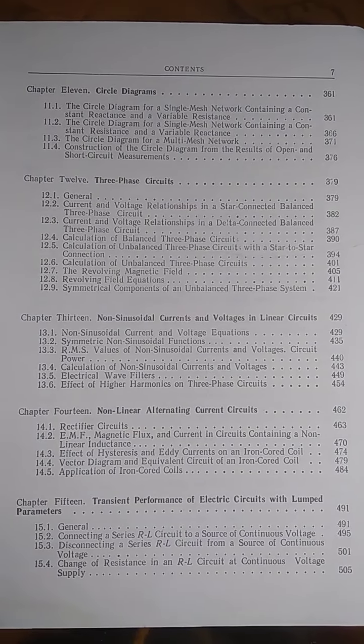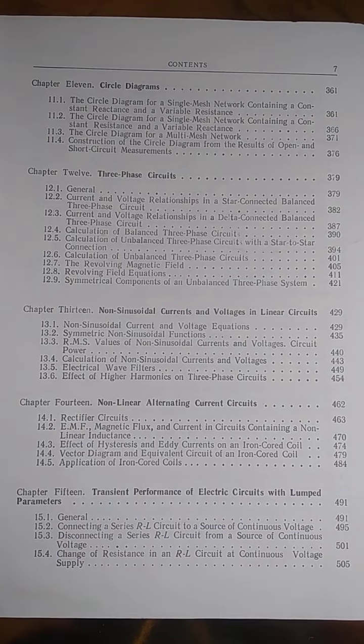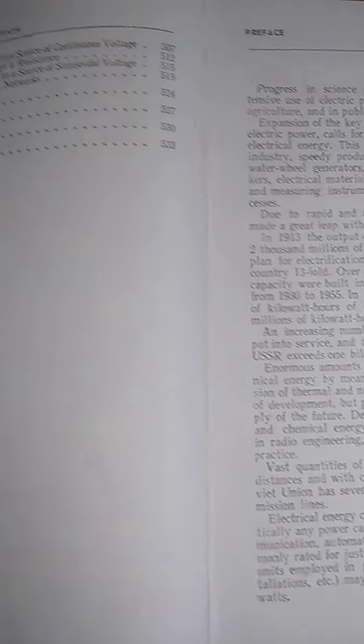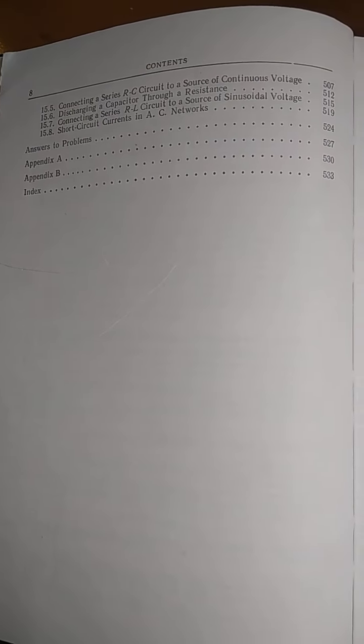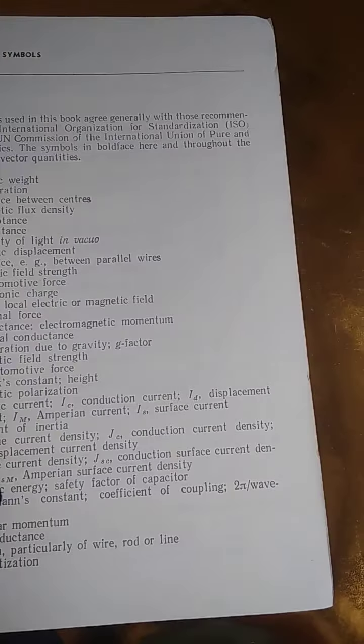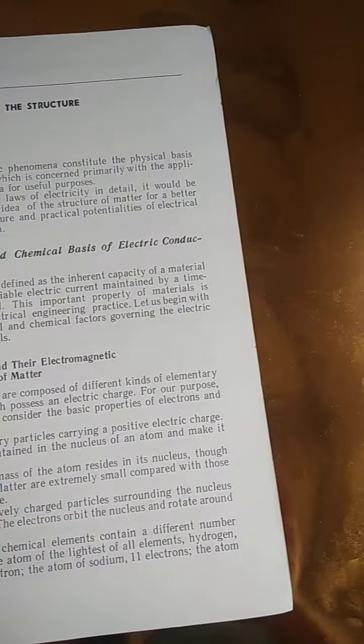Nonlinear alternating current circuits, transient performance of electric circuits with lumped parameters - that's the last chapter. Then answers to problems. Also there's 500 plus pages. This is the preface. First there is a glossary of symbols.